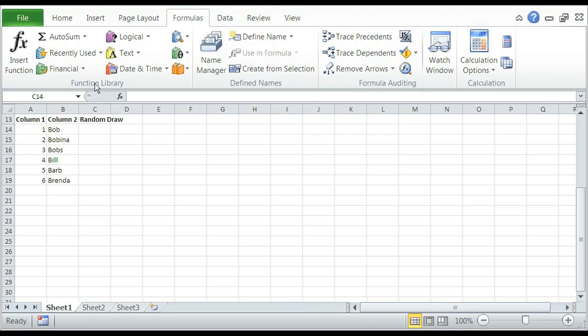Now we're going to insert our random draws. We'll select cell C and select Formulas on the tabs above. When we select Formulas, we're going to select Insert Function.